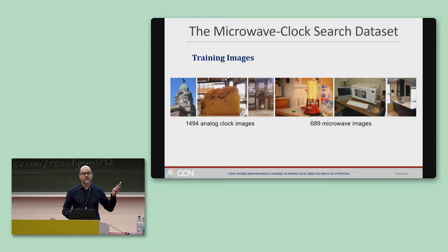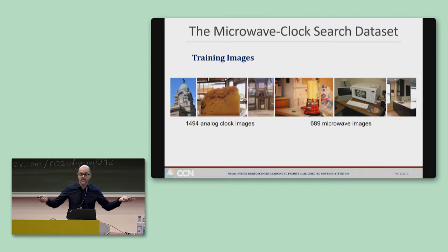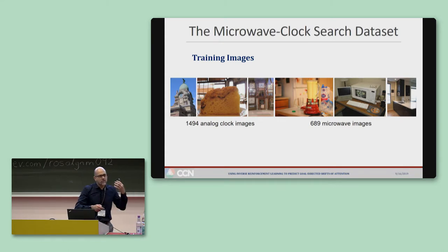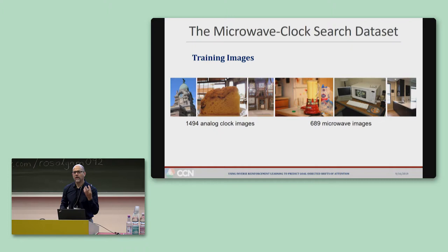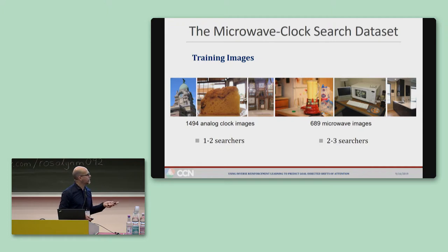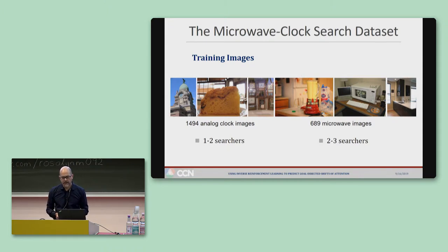Notice, however, that some of these images are far from ideal — for instance, a clock on the left right at center where the search started, or some images have multiple exemplars of the target, or a big microwave again at the center. This is that trade-off: in order to have lots of images, you need to tolerate lots of variability in search difficulty. Each clock image was searched by one to two subjects, and each microwave image by two to three subjects.